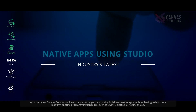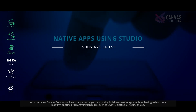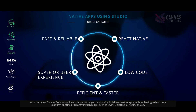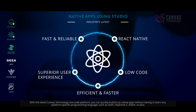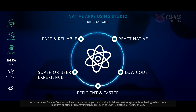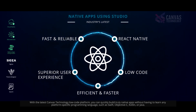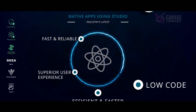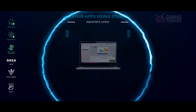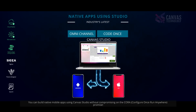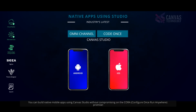With the latest Canvas technology low-code platform, you can quickly build truly native apps without having to learn any platform-specific programming language such as Swift, Objective-C, Kotlin, or Java. You can build native mobile apps using Canvas Studio without compromising on the 'configure once, run anywhere' promise.